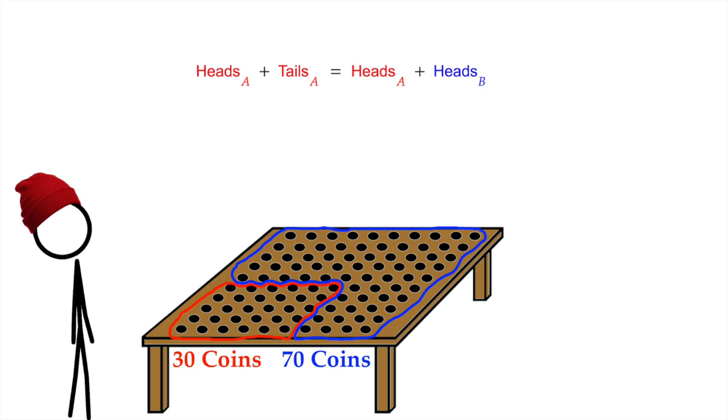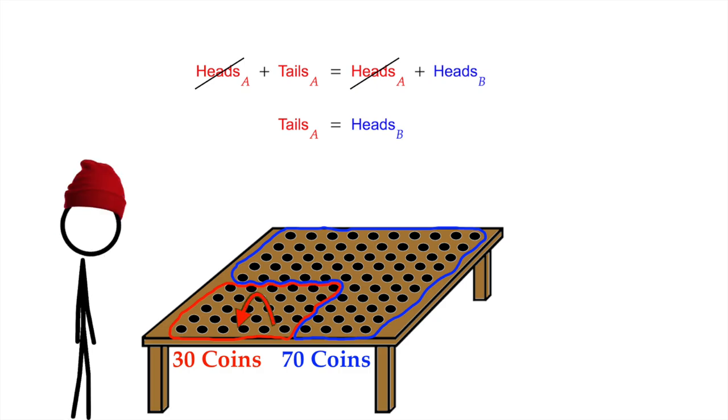As you can see, we've got a common term which we can cancel away. Tails in A equals heads in B. Huh, that's weird. All we've done is made two piles. And yet already, we are guaranteed to have the same number of tails in A as heads in B.